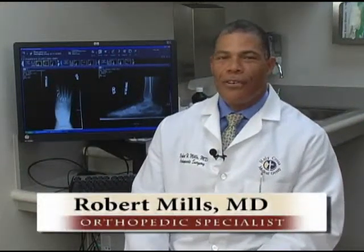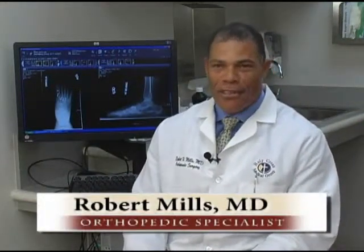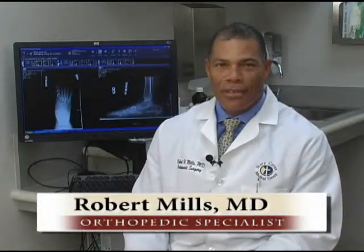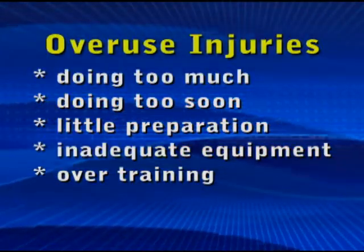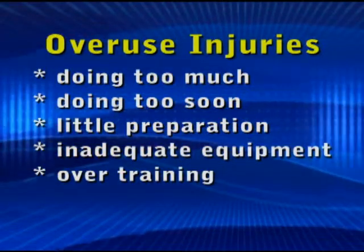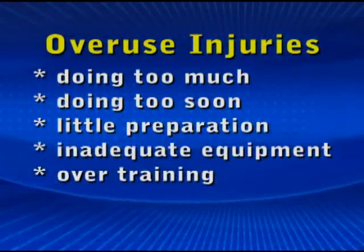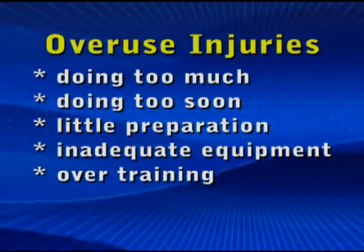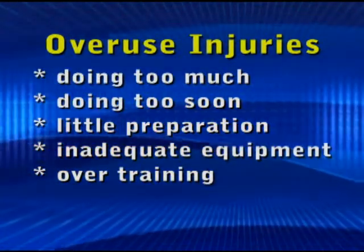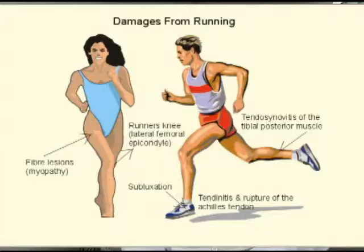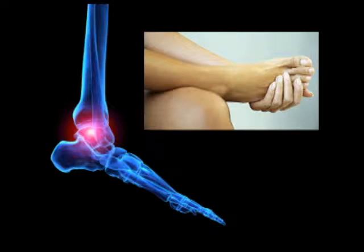In our practice we're involved with sports medicine, which largely involves overuse injuries. The majority of overuse injuries occur from doing too much too soon with too little preparation, inadequate equipment, or overtraining. They result in bony injuries, tendinous injuries, ligamentous injuries, and joint injuries. Some can be debilitating, and some are just an annoyance.